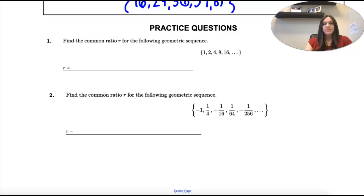Okay, number one. We want to find the common ratio for our geometric sequence. So geometric means we're multiplying between terms.